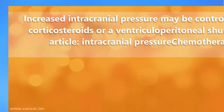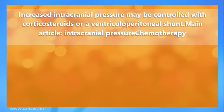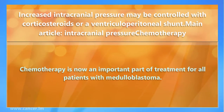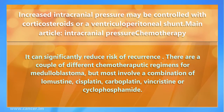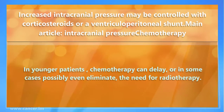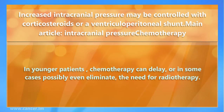Increased intracranial pressure may be controlled with corticosteroids or a ventriculoperitoneal shunt. Chemotherapy is now an important part of treatment for all patients with medulloblastoma and can significantly reduce the risk of recurrence. Most regimens involve a combination of lomustine, cisplatin, carboplatin, vincristine, or cyclophosphamide. In younger patients, chemotherapy can delay or in some cases possibly even eliminate the need for radiotherapy.